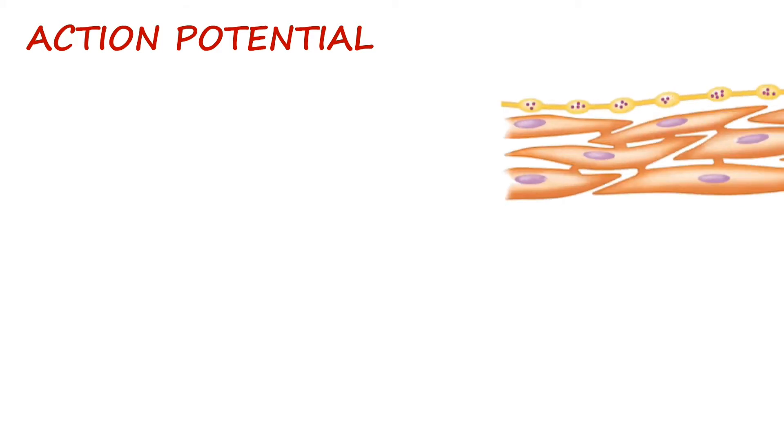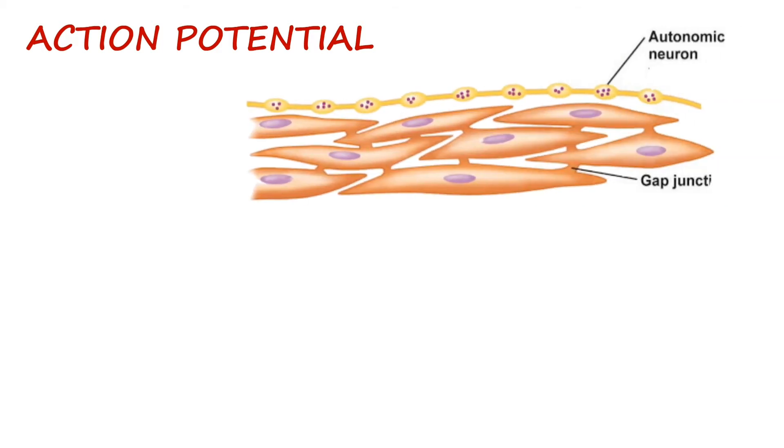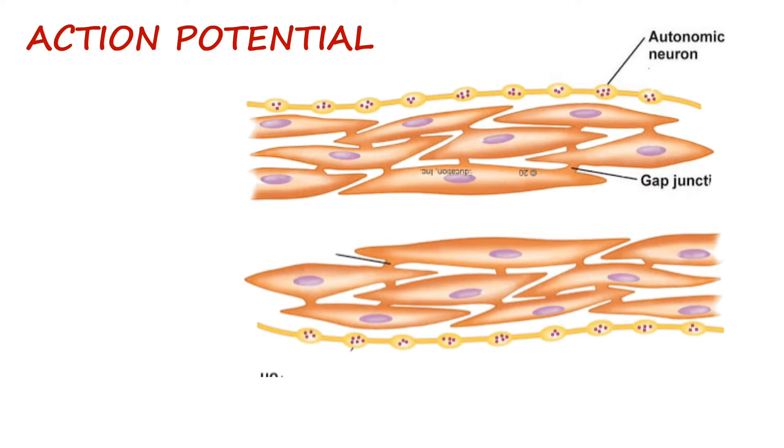First, what we must know is the smooth muscle fibers are arranged in bundles. Each bundle contains about a thousand fibers. These muscle fibers are connected with each other through gap junctions.